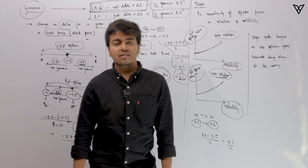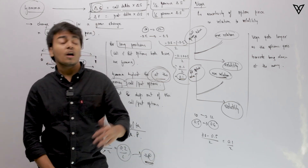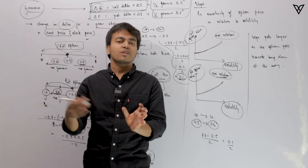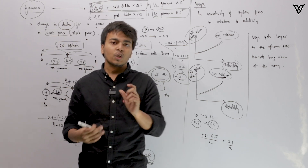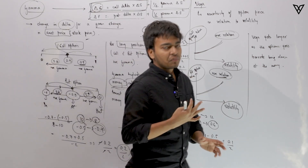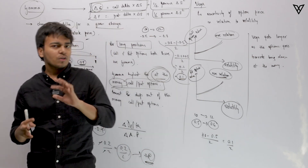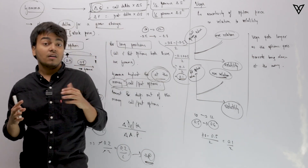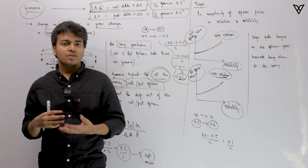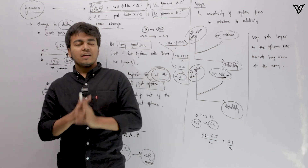Vega tends to get larger when you are standing at the money — moving towards at the money increases vega. Delta and gamma are the key Greeks to understand in detail. In the next few videos we will cover rho, theta, and the other option Greeks, then the delta neutral strategy, and then this chapter will be complete.